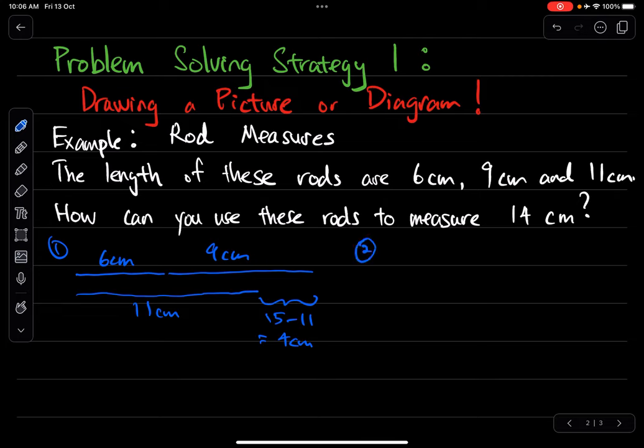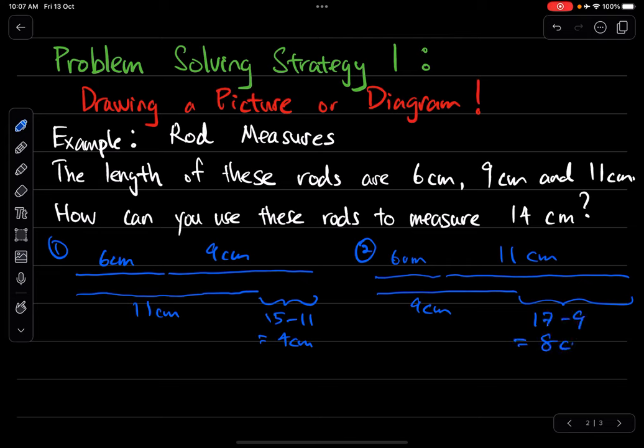For the second diagram, I'm going to line 6cm and 11cm. Then the third one, 9cm, will be on the other side. What is this particular gap over here? It will be 17 minus 9, which will be 8cm. So this particular setup will allow me to measure 8cm.